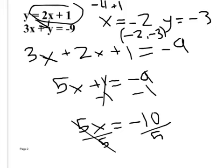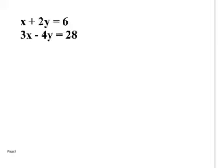So instead of graphing them, we solved it algebraically by substituting. If you graph these two, that is where they would cross. Any questions? Write these two down: we have x plus 2y equals 6 and we have 3x minus 4y equals 28.